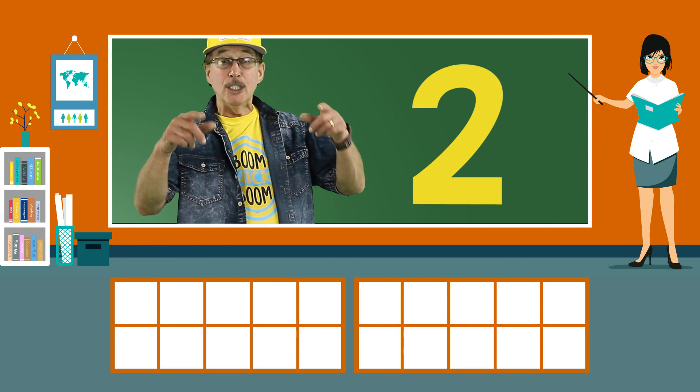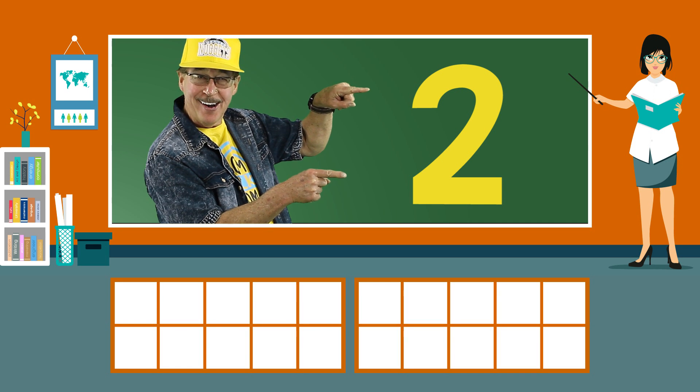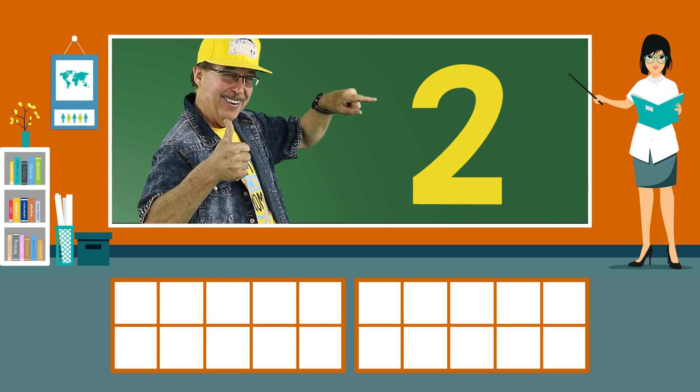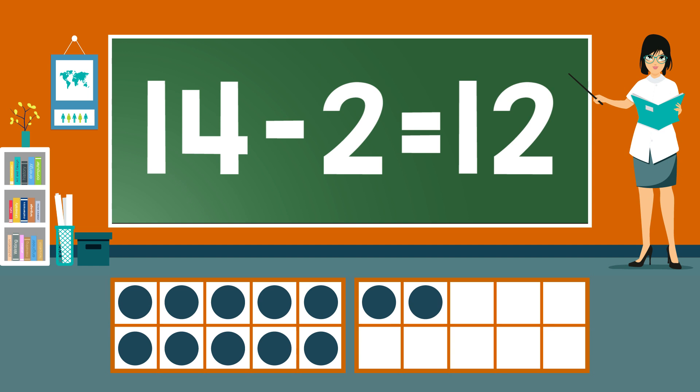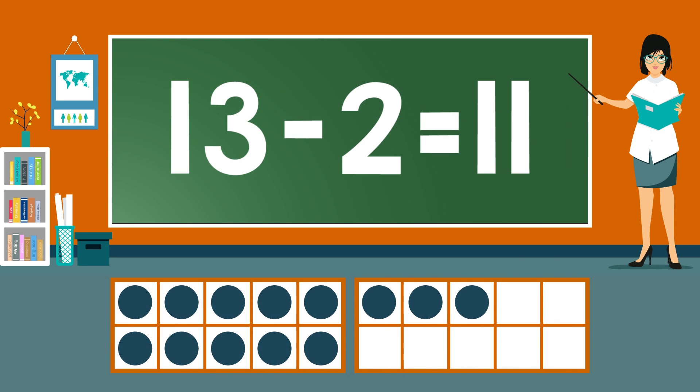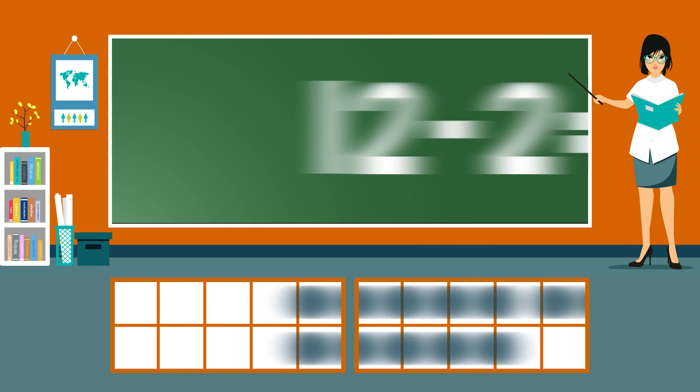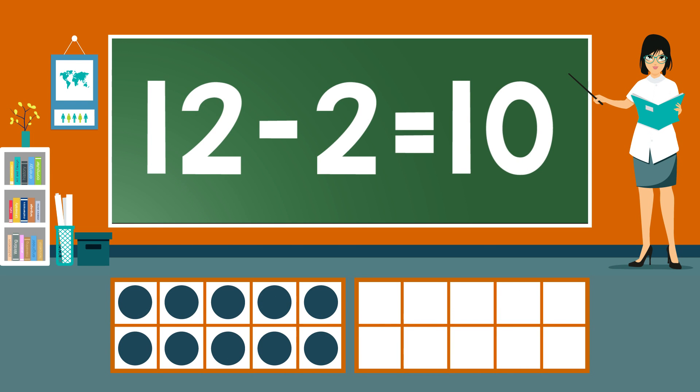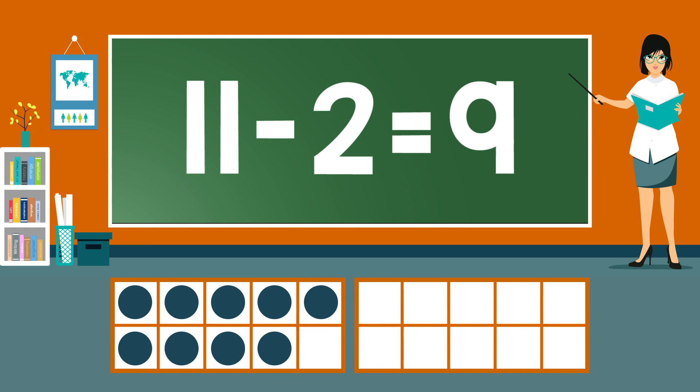Subtract 2 from each number. 14-2 equals 12. 13-2 equals 11. 12-2 equals 10. 11-2 equals 9.